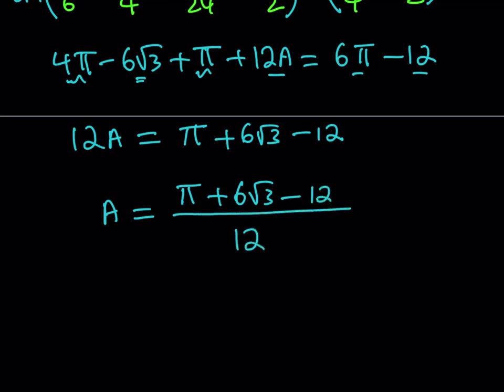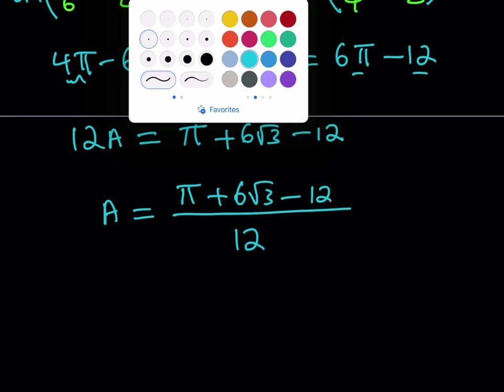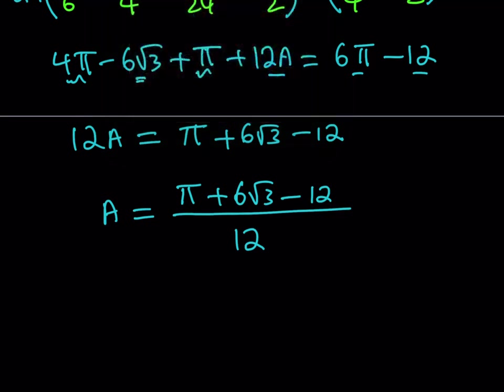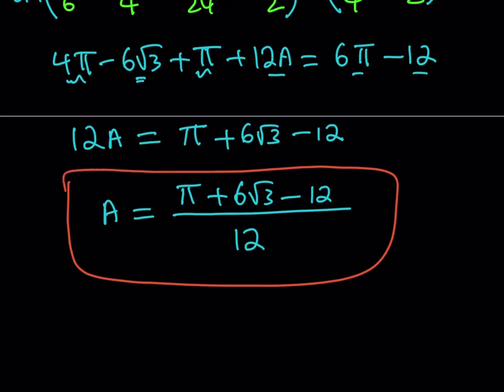Obviously, you can go ahead and simplify this fraction, or you can separate them like pi over 12 plus root 3 over 2 minus 1. Doesn't matter how you write it. At the end, it's the same answer. It's totally up to you if you want to simplify that. But this brings us to the end of this video, and thank you for watching. I hope you enjoyed it. I'll see you with another video tomorrow at the same time. Until then, I'd like you to be safe and take care. Bye-bye.